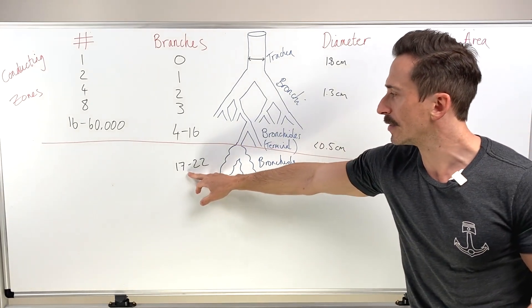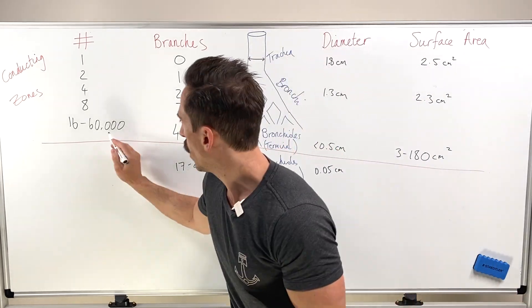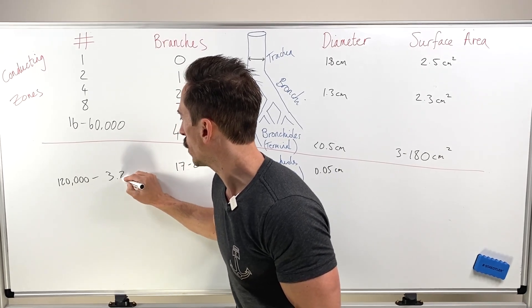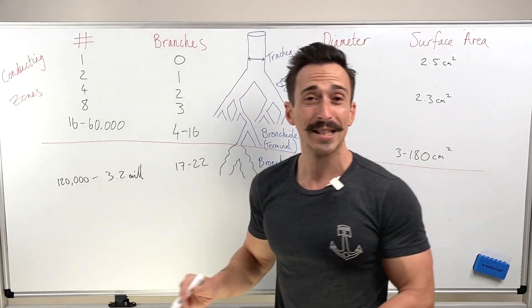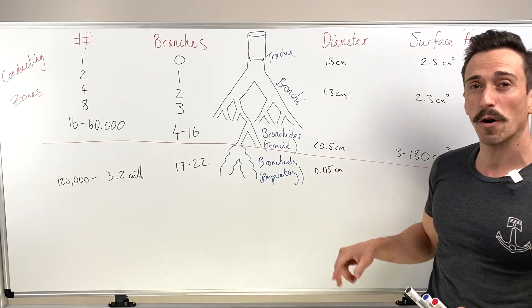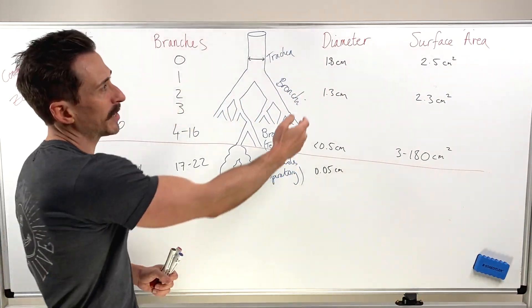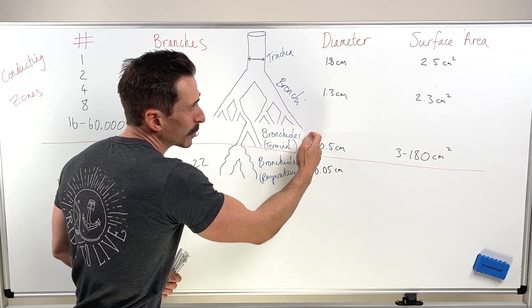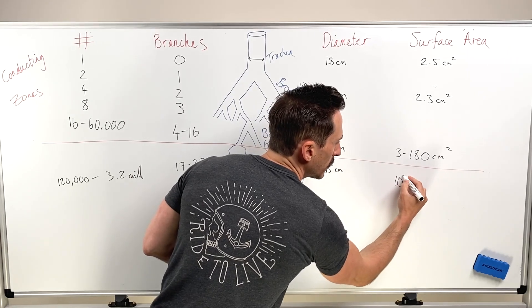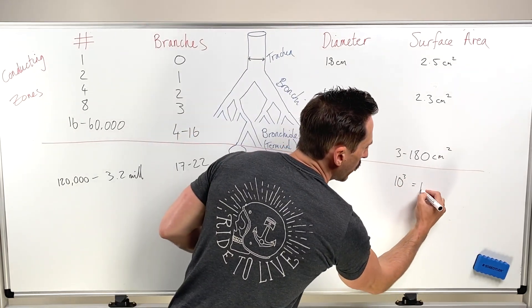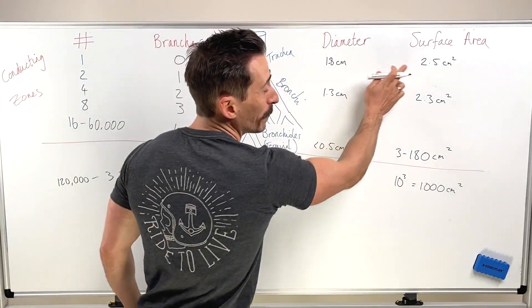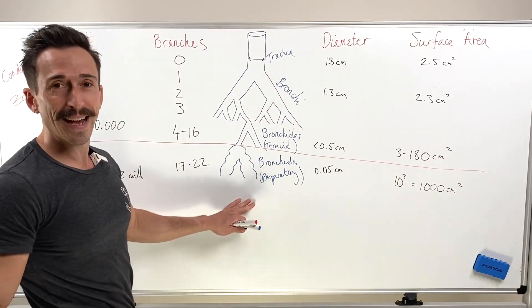That's the diameter of a respiratory bronchiole. And they branch from 17th to the 22nd, which means how many do we create? Well, 60 plus 60 is 120,000. And we go all the way to around about 3.2 million of them. So we end up generating around about 3.2 million of these respiratory bronchioles, each of which are less than 0.05 centimeters in diameter. Now you can see as we go down in diameter, the surface area increases. What's going to be the surface area here? It's going to be 10 to the 3 centimeters squared. That's 1,000 centimeters squared.